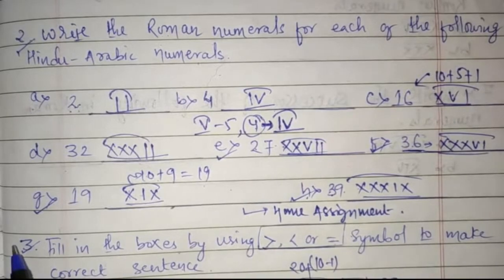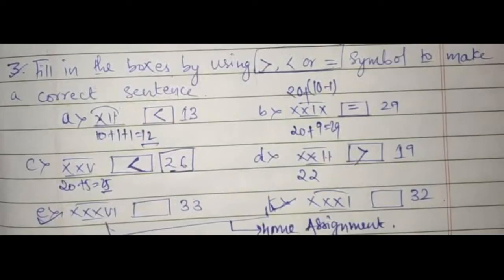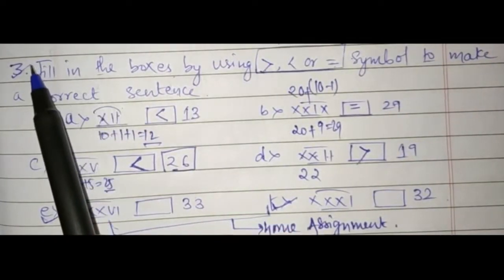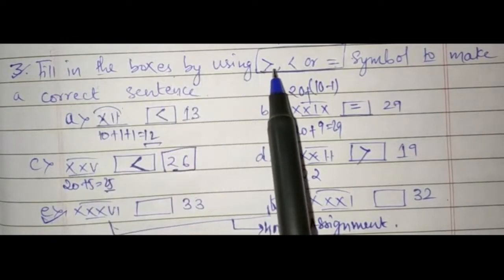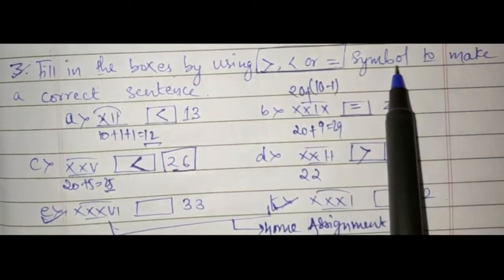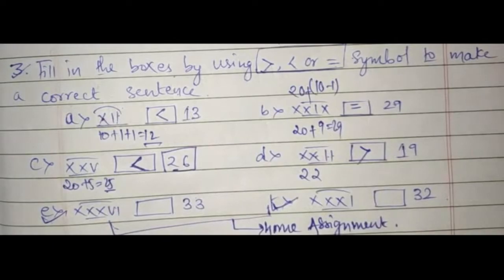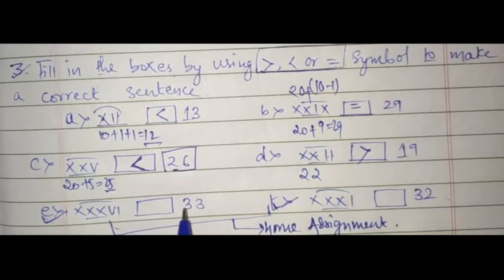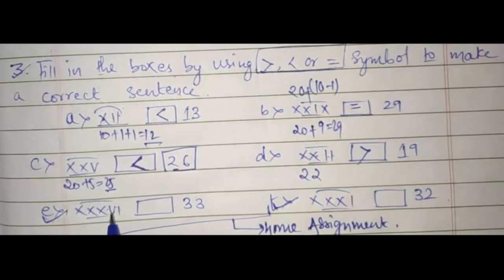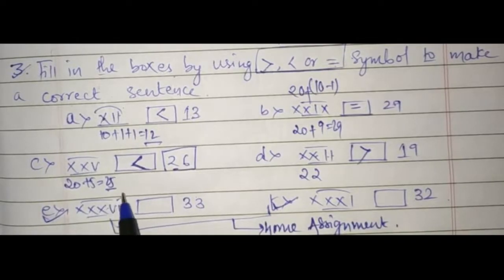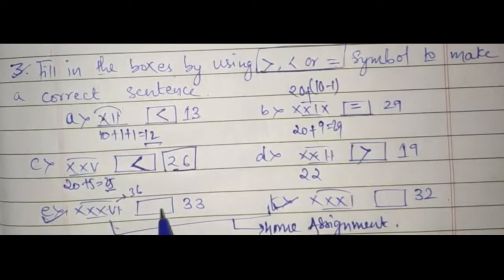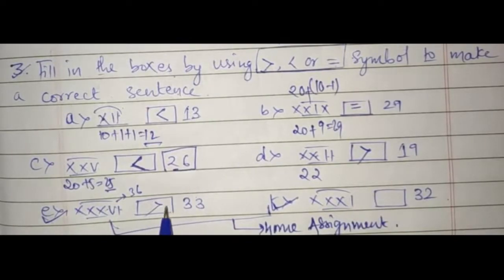Proceeding further to question number 3, we have our next home assignment. Fill in the boxes using greater than, less than, or equal to symbol to make the correct sentence. You have to choose between the two — which one is greater, which one is smaller. So XXXVI represents 36. Which one is greater? Obviously, 36 is greater than 33, so we are going to use the greater than sign.